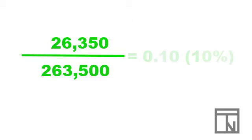Remember, we take the return, or net income, of $26,350 and divide that by total sales of $263,500. This gives us 0.10, or 10%.